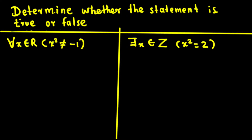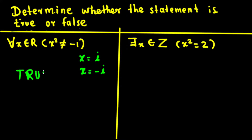What number can make x squared equal to negative one? We know that when x is equal to i, squaring gives negative one, and also when x is equal to negative i. But here they are saying for all x belonging to the real numbers — and these two values are not real numbers. So x squared is not equal to negative one for all real x. This is a true statement.